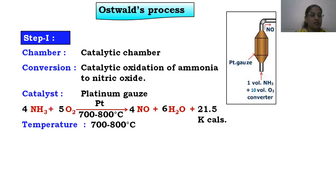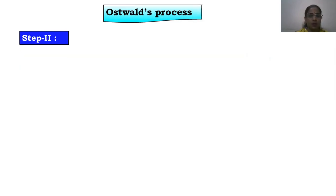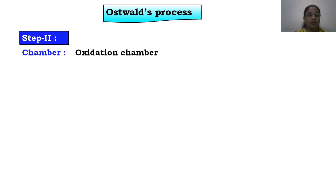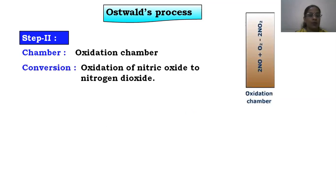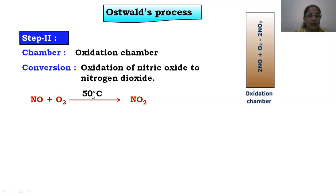We need to remember the catalyst and temperature as important conditions for step number one. In step number one we obtain NO (nitric oxide). This nitric oxide is taken to the second chamber — step number two — called the oxidation chamber. In the oxidation chamber, as the name suggests, oxidation of nitric oxide takes place, converting NO to NO2, that is nitrogen dioxide.